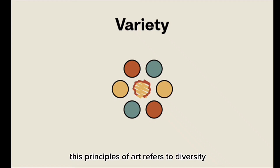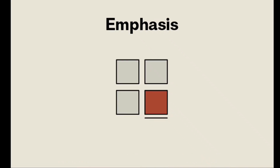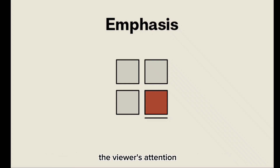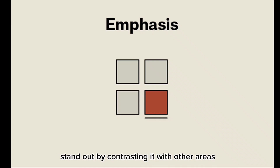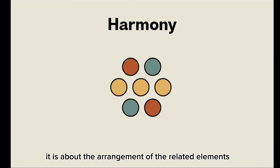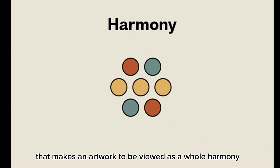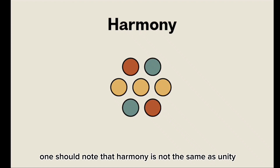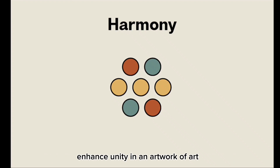The sixth principle is variety, which refers to diversity or the different elements used in an artwork to make it more interesting. The seventh is emphasis — giving greater impact or highlight to a certain element in an artwork. Emphasis is the part of the design that catches the viewer's attention; usually the artist makes one area stand out by contrasting it with other areas. Finally, harmony refers to the unity of an artwork — the arrangement of related elements that makes an artwork be viewed as a whole. Harmony creates cohesiveness by stressing the similarities of separate but related parts, and while it is not the same as unity, it enhances unity in a work of art.